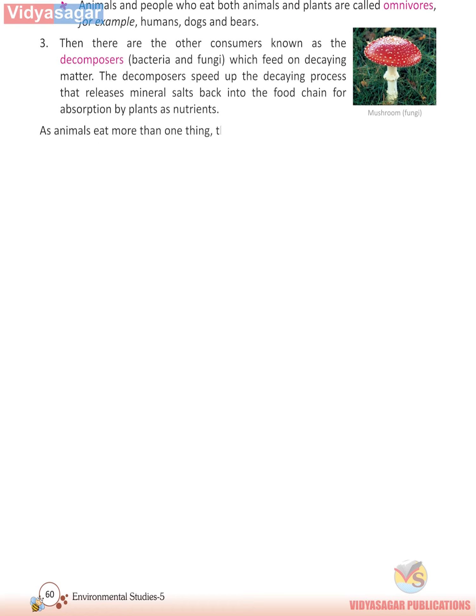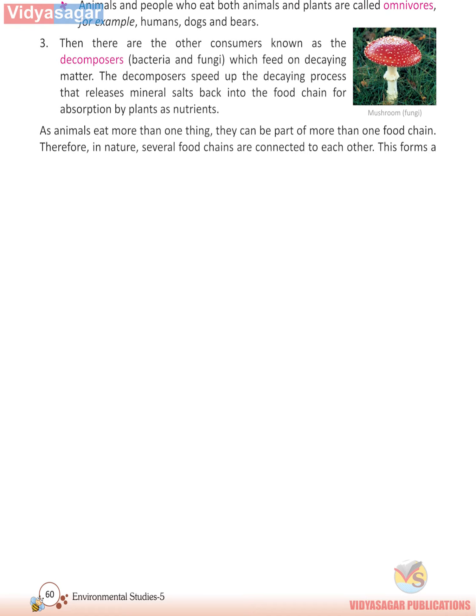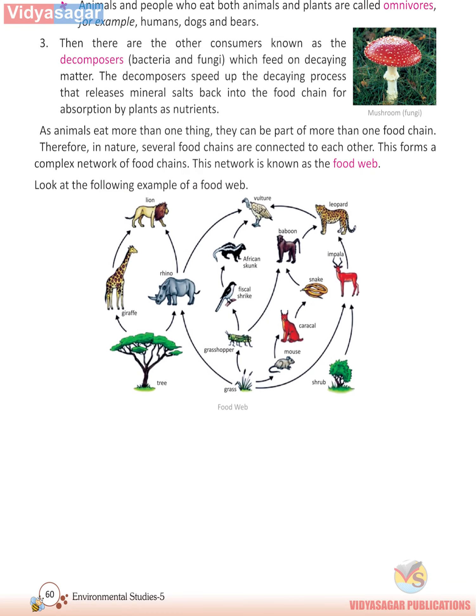As animals eat more than one thing, they can be part of more than one food chain. Therefore, in nature, several food chains are connected to each other. This forms a complex network of food chains known as the food web. Look at the following example of a food web.